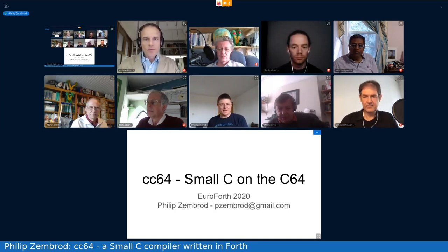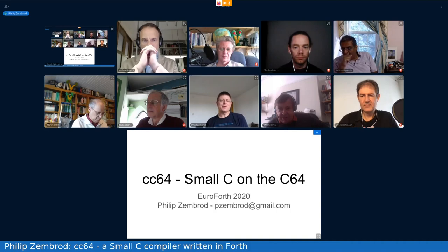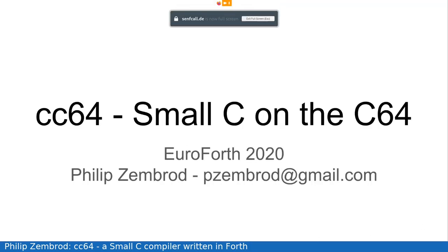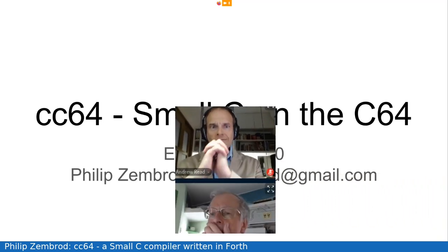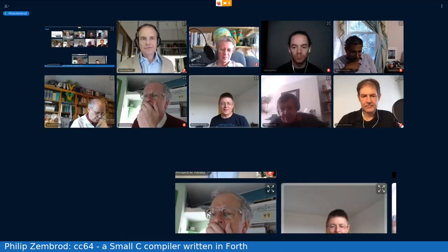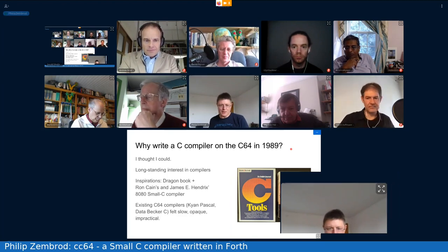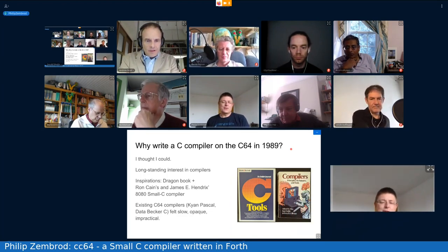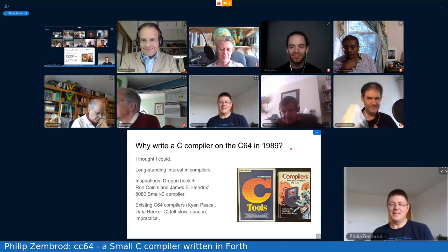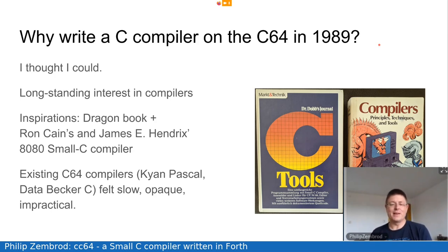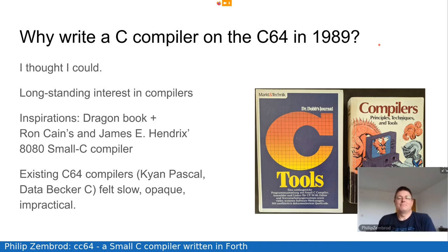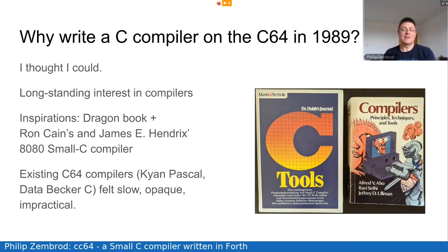I very much appreciate the opportunity to talk to this audience about a very old, pure hobby project of mine. Thanks go particularly to Carsten and to Gerald for encouraging me to do this. So why would I want to write a C compiler on the Commodore 64 in 1989? The machine was already on its decline at that point. Nowadays the whole talk obviously is fully in the realm of retro computing, and the simple and most important answer is: I thought I could do it.